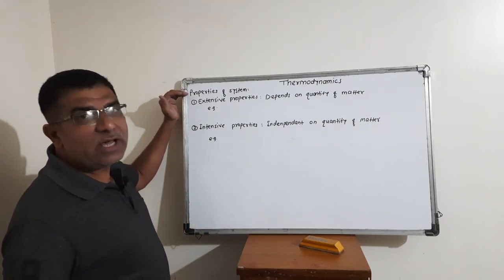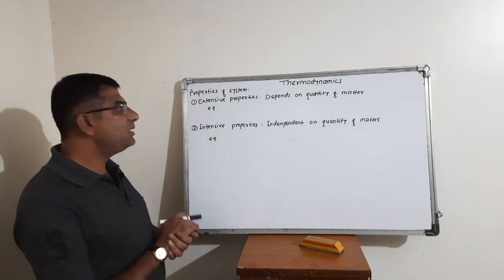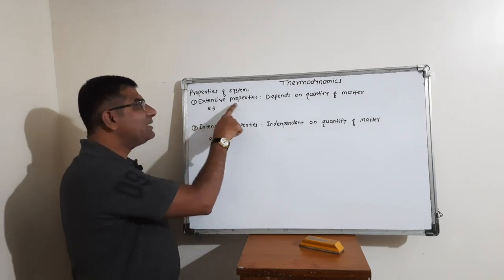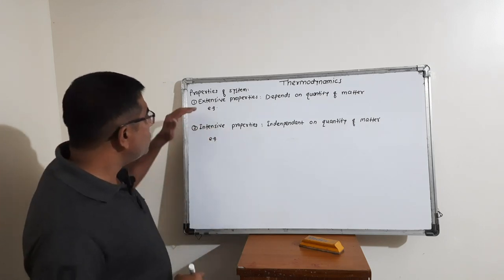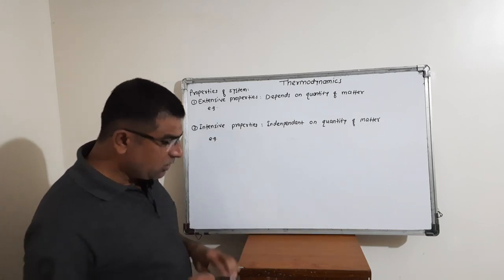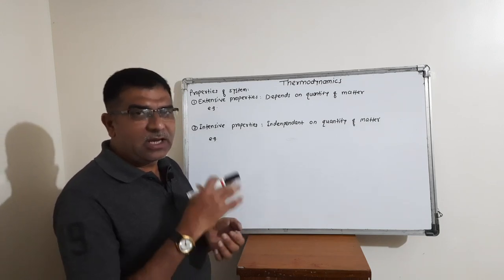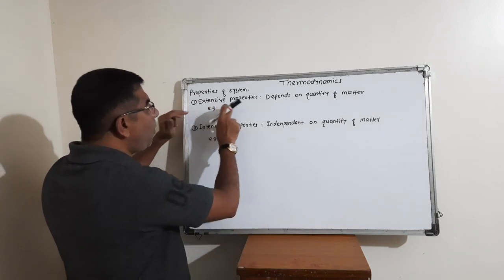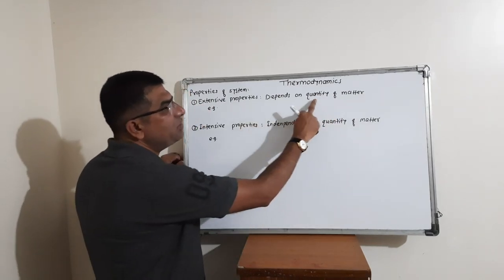After the types of systems, we discuss the two types of thermodynamic properties. The first type is called extensive properties and the second type is called intensive properties. When you consider matter, if a given thermodynamic property changes when the quantity of matter changes, that property depends on the quantity of matter.